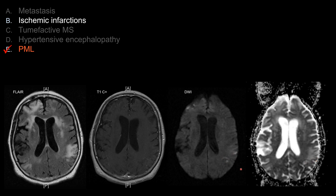But if you think about this being a chronic infarction with T2 shine-through with a bright ADC signal, for chronic infarction I would like to see more volume loss, which I don't see here. So B is not the best answer.